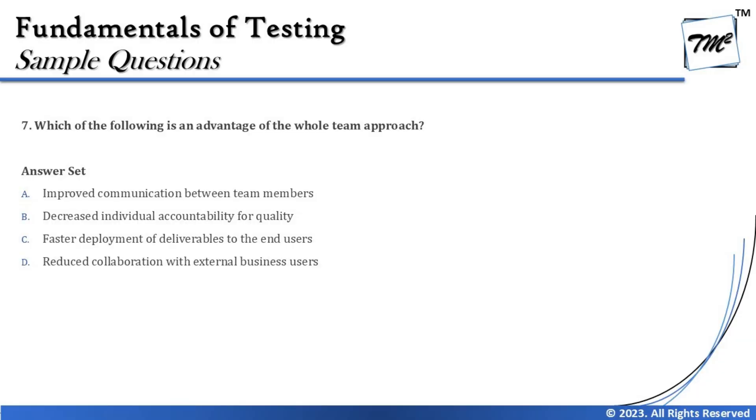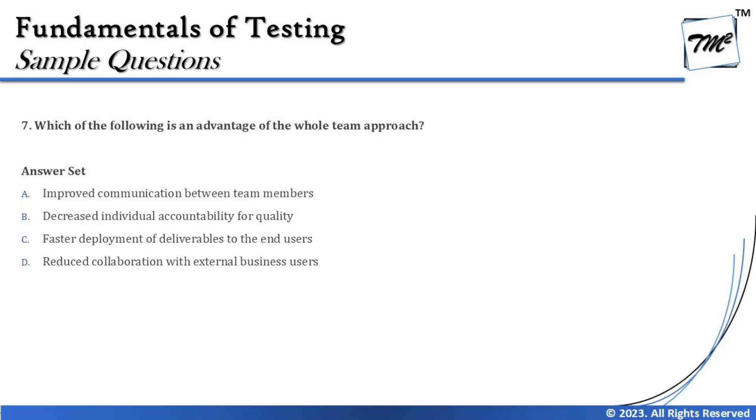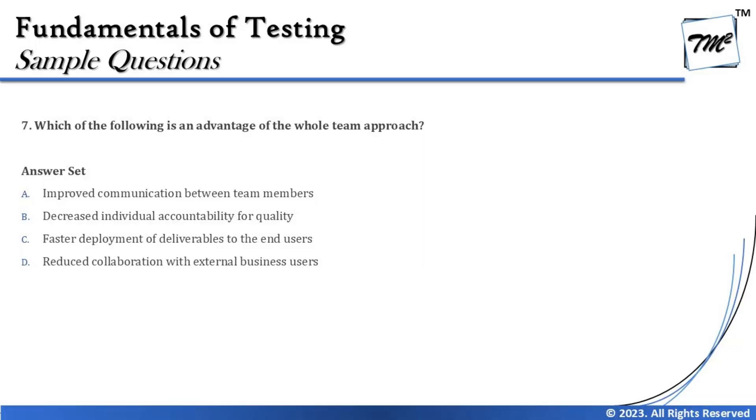So what is an advantage of the whole team approach? Option A says improved communication between team members — yes, working co-located face-to-face certainly improves communication. But I need to verify all remaining options before concluding. Option B says decreased individual accountability — no. Quality is everyone's responsibility. The whole team approach introduced that quality will no longer be just the testing team's responsibility. In agile, quality of the product is everyone's responsibility, so decreased is not the right word.